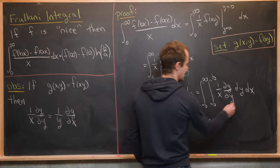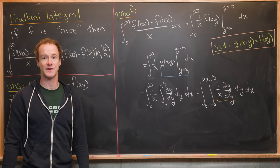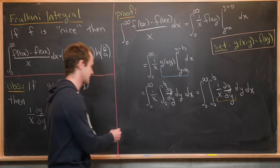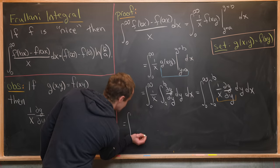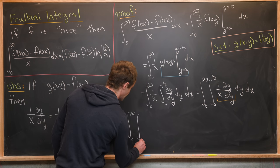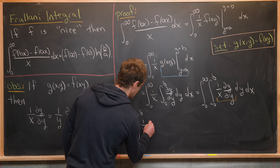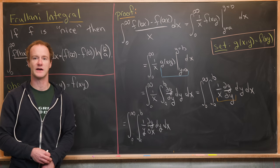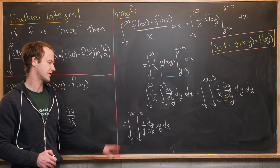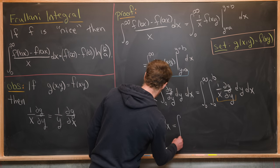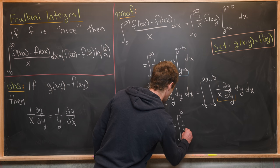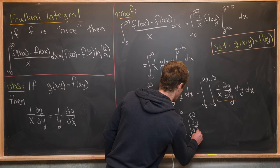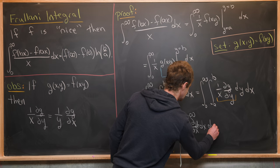We have the double integral from zero to infinity and from a to b of (1/x)(∂g/∂y) dy dx. Next we apply the observation to the (1/x)(∂g/∂y) term: it equals (1/y)(∂g/∂x). So we have the integral from zero to infinity and from a to b of (1/y)(∂g/∂x) dy dx. We split this back into an iterated integral and change the order of integration, giving the integral from a to b of (1/y) times the integral from zero to infinity of ∂g/∂x dx, dy.